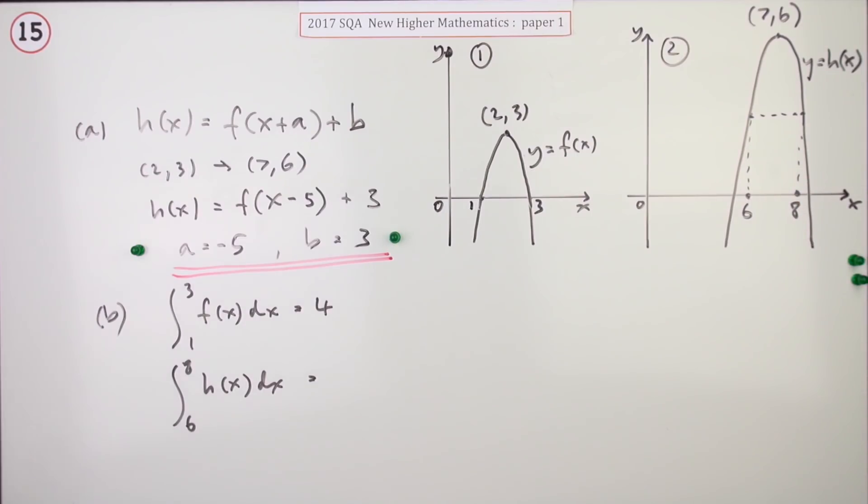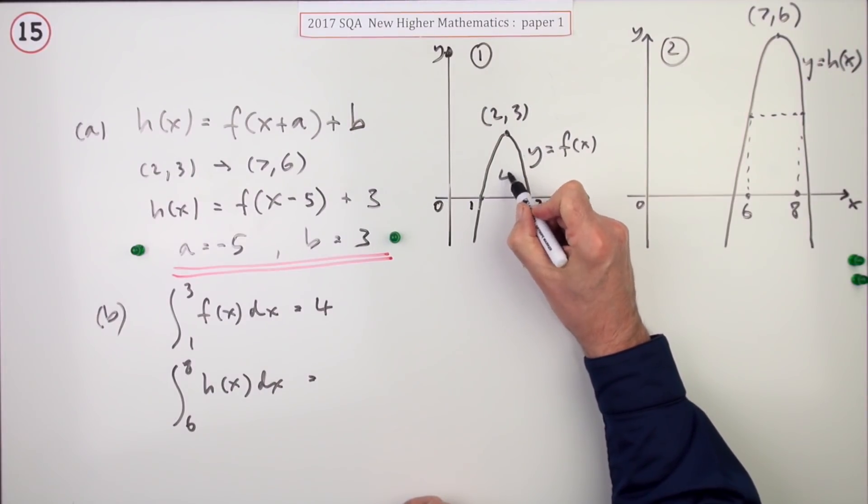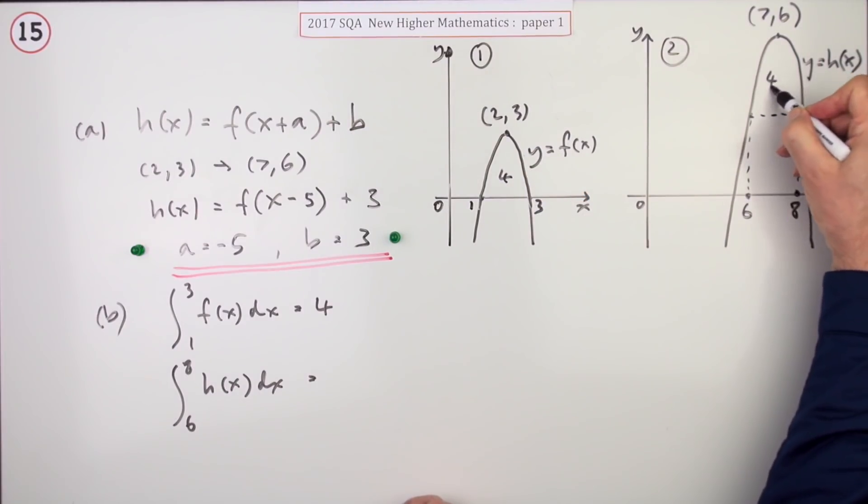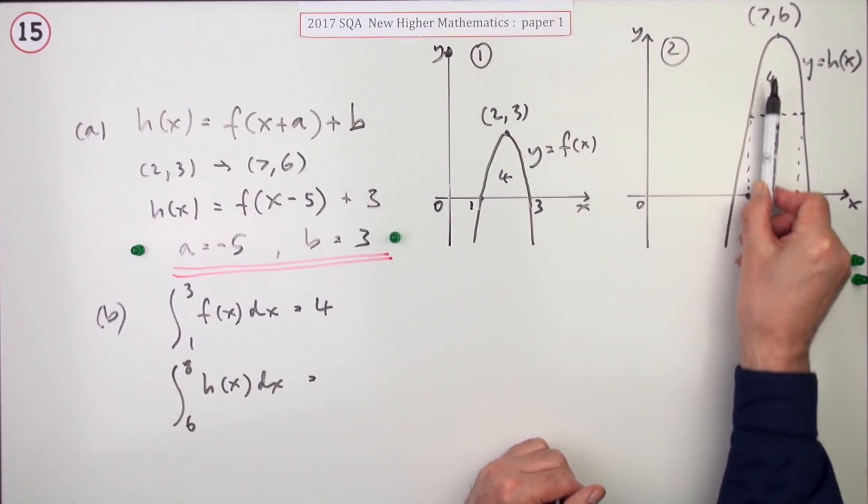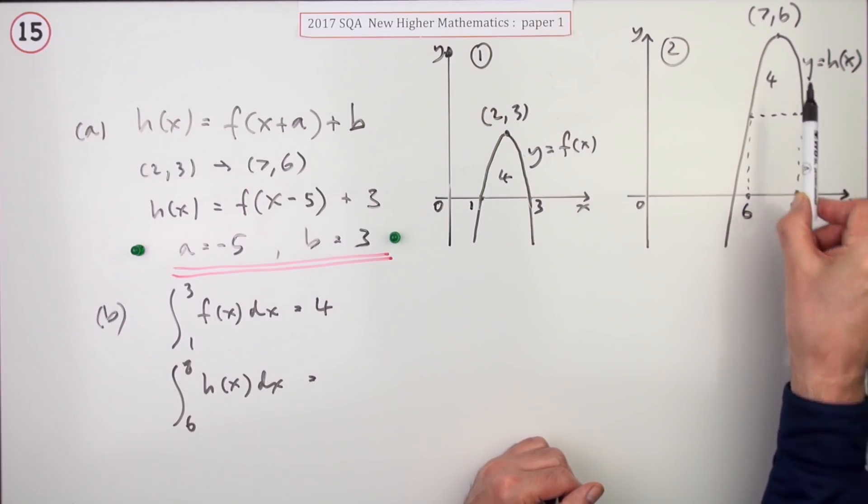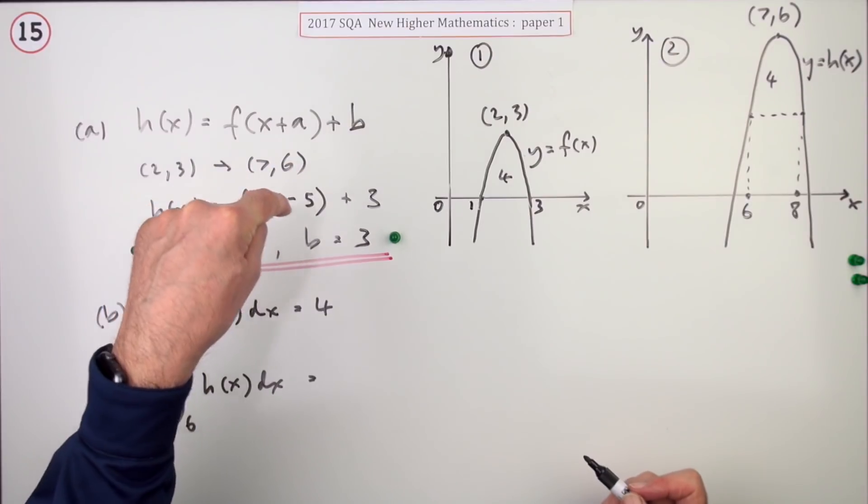Well, if that's got an area of 4, then this bit that's been shifted up has an area of 4. So the whole area from 6 to 8 will be 4 plus this and after all that's just a rectangle. The whole thing was shifted up 3.